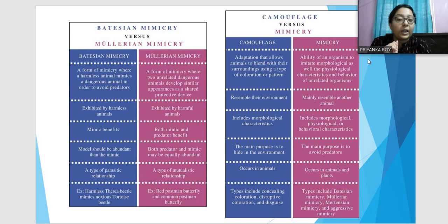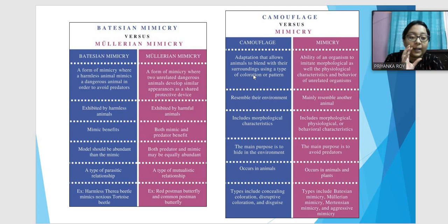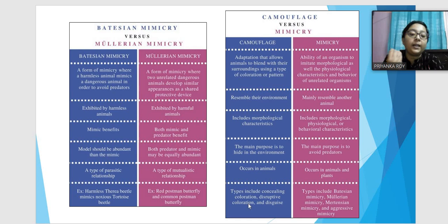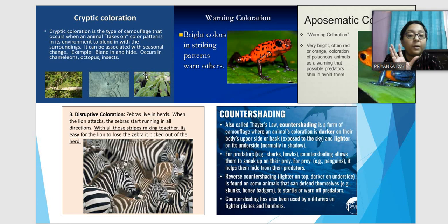The difference between camouflage and mimicry: camouflage is when animals blend into their surroundings using pattern or color, while mimicry is when an organism imitates or resembles another living or non-living object — it can also be behavioral. Camouflage mainly resembles the environment through morphological characteristics; mimicry resembles another animal through morphological, physiological, and behavioral means. Mimicry's main purpose is to avoid predators; camouflage is for hiding. Mimicry occurs in plants as well.